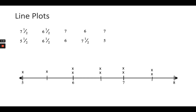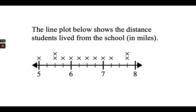Now let's look at another line plot and answer some questions, but first I'll analyze and interpret the data. The line plot below shows the distance students lived from school in miles. One X above five means one student lives five miles from school; two X's above five and a half means two students lived five and a half miles from school. I can also see that no students lived seven and a half miles from school.